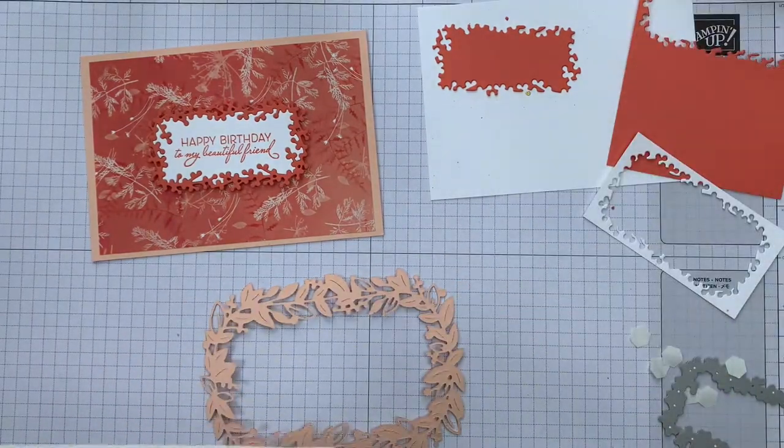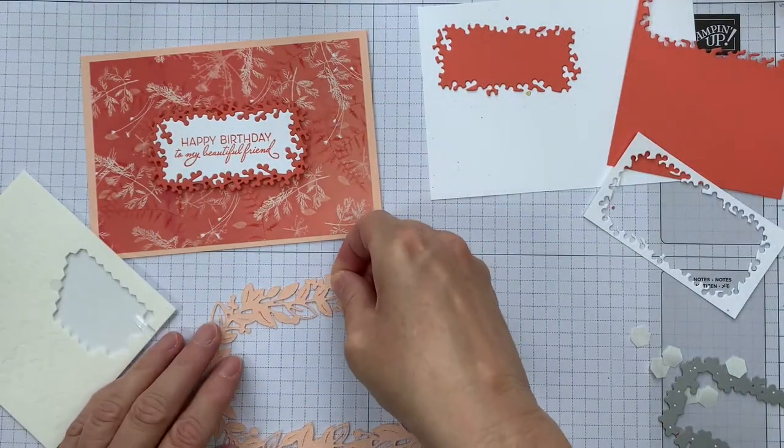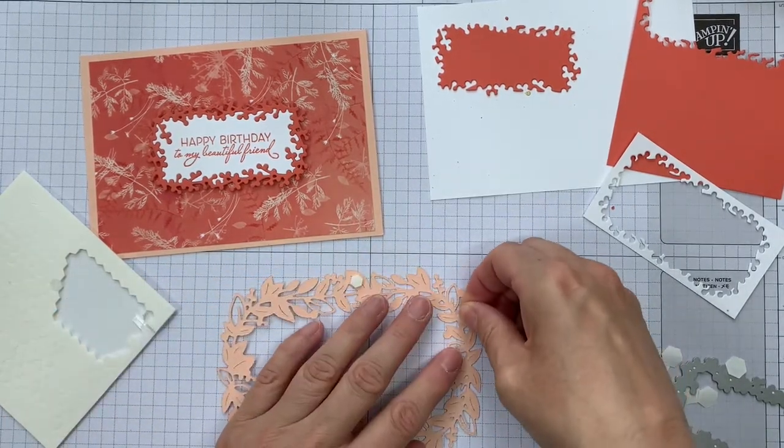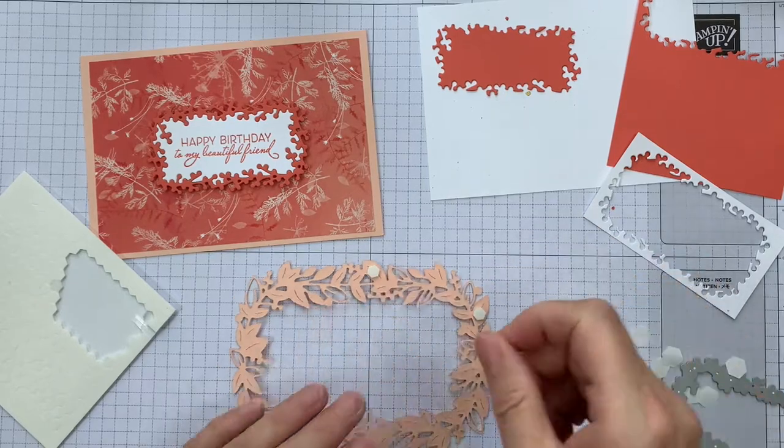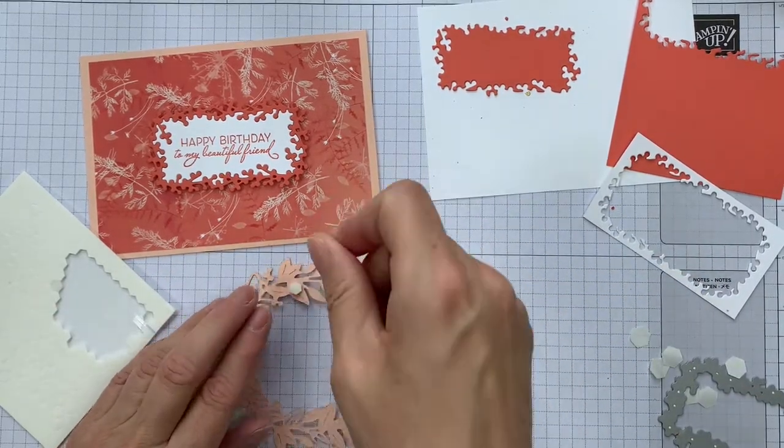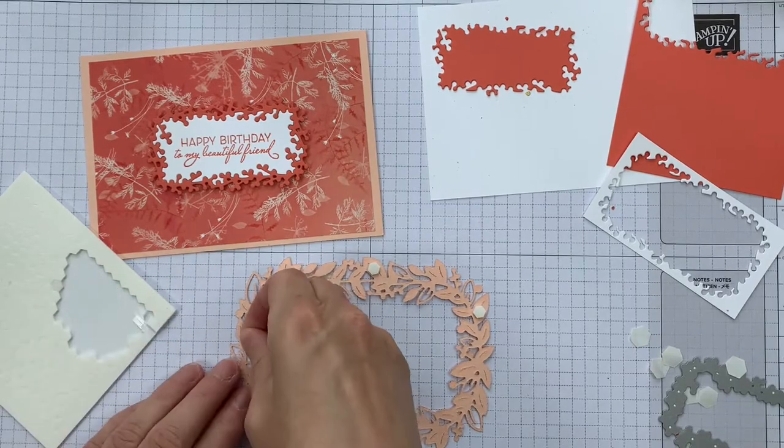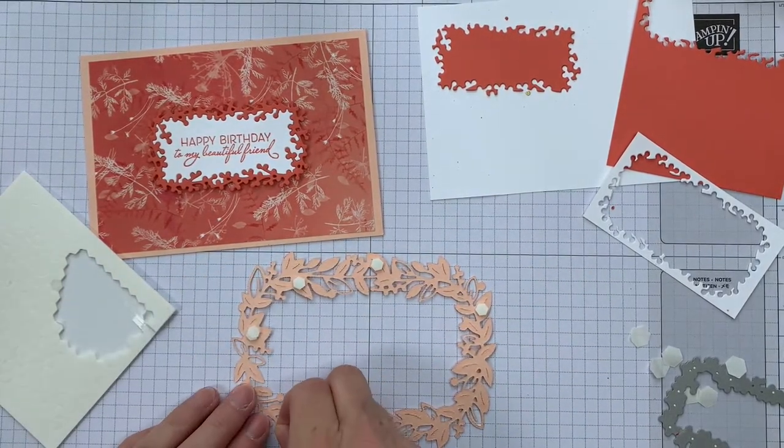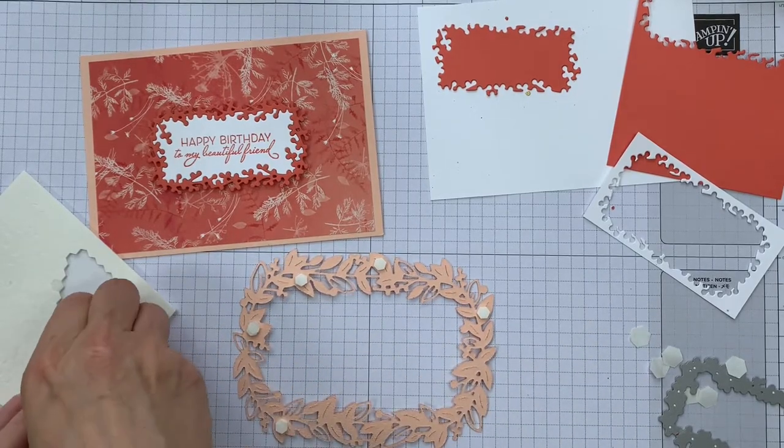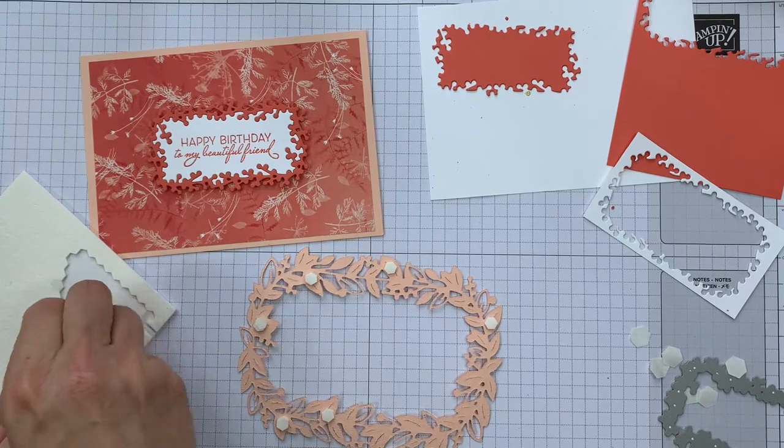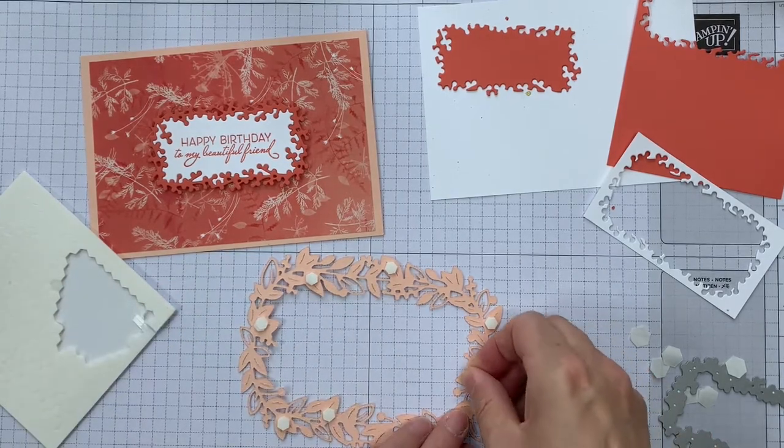And then I'm going to use some mini dimensionals on the back of this frame. And they may even have to be snipped a little bit. So I'm using them on the wider leaves, again so that they're not going to be seen. And I just want to make sure that I've got enough to support this frame.